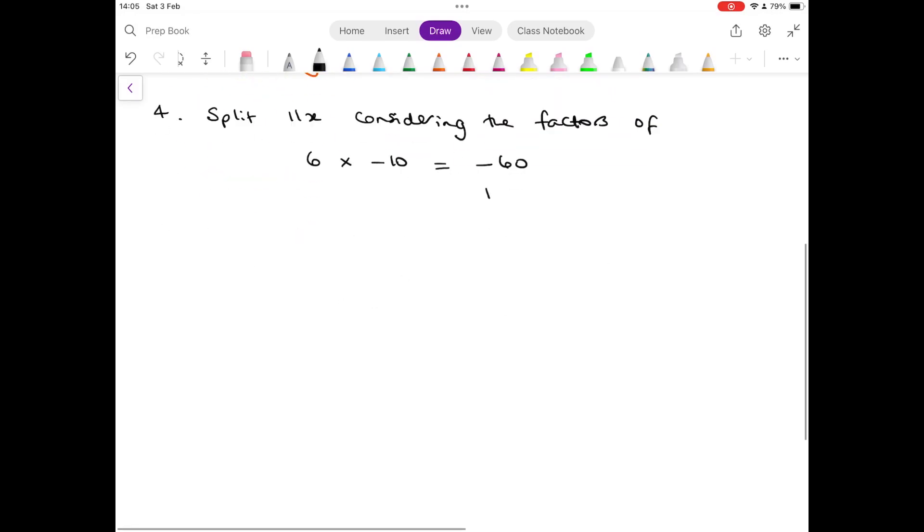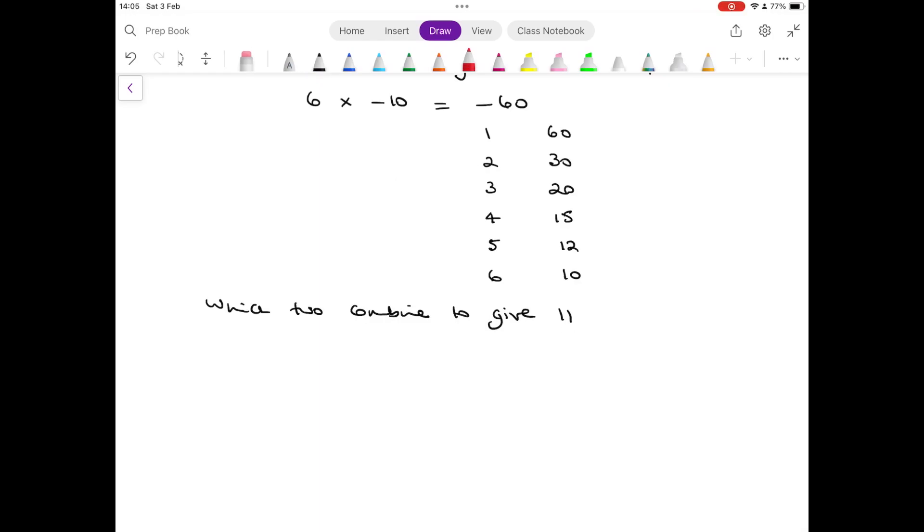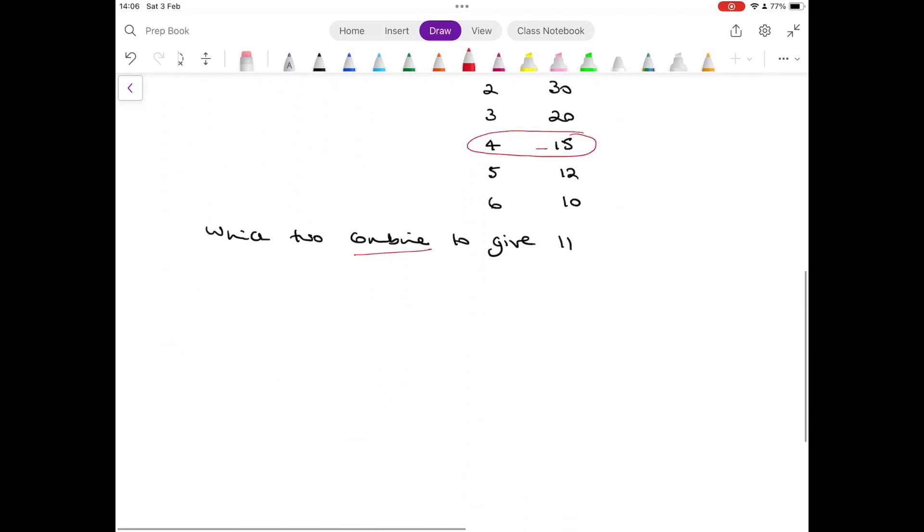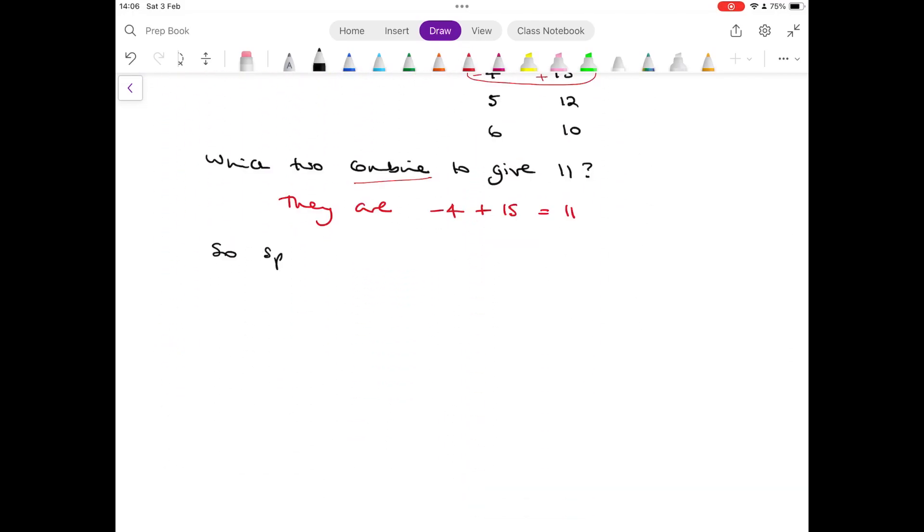And look at all the factors: 1 and 60, 2 and 33 and 24 and 15, 5 and 12, 6 and 10. Which two numbers combine to give 11? Well that's 4 and 15. We want plus 11 so we need plus 15 and minus 4.